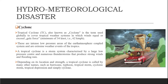Heavy rains can produce significant inland flooding, and storm surges can produce extensive coastal flooding up to 40 kilometers from the coastline. Although their effect on human populations can be devastating, tropical cyclones can also relieve drought conditions. They carry heat and energy away from the tropics and transport it toward temperate latitudes, making them an important part of the global atmospheric circulation mechanism and helping maintain a relatively stable temperature worldwide.